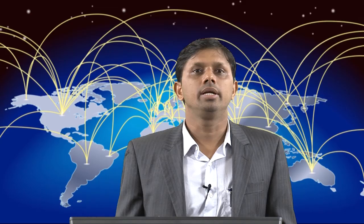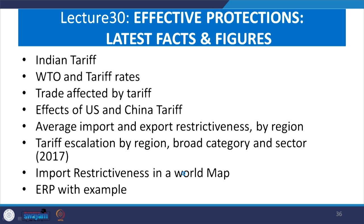In lecture number 30 on effective protections, we discussed latest facts and figures on Indian tariff, WTO and tariff rates, then US-China tariffs and why the tariff trade war was taking place recently. We mapped the extent of restriction of imports and exports by region, by sector, and tariff escalation by referring to the UNCTAD database. We checked the world map with effective rate of protection. Very restrictive areas include India and some parts of Africa, which are the most import-restrictive countries as per the UNCTAD report 2017.